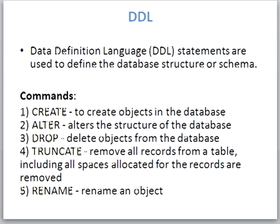Suppose if you want to add one more column into the table or you want to drop one column from the table, we can use the ALTER command. There are other options used in ALTER which I am going to explain in the next lesson. The third one is DROP. DROP is used to delete the table or object from the database. With the help of the DROP command, we can delete the structure as well as records or rows from the database.